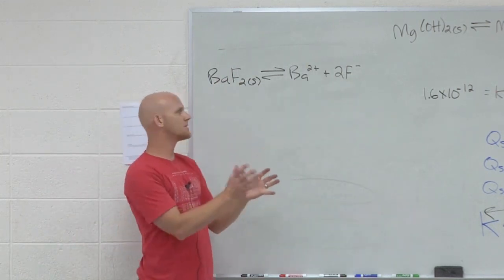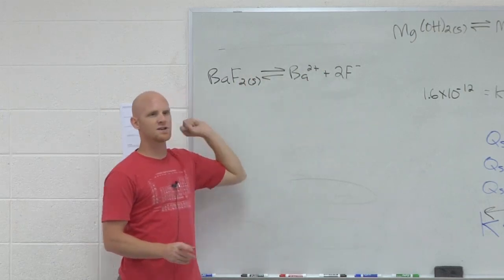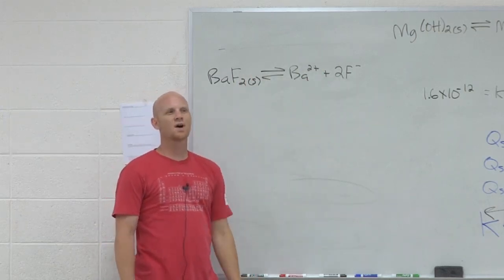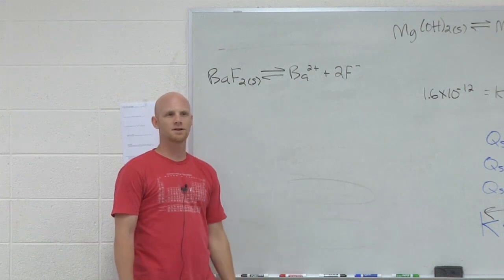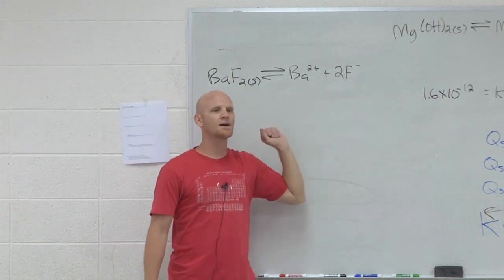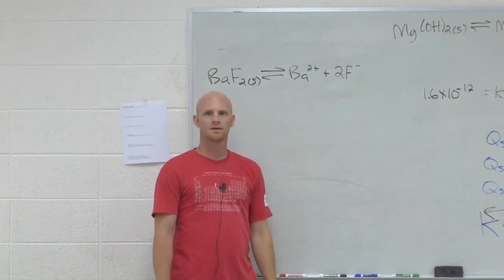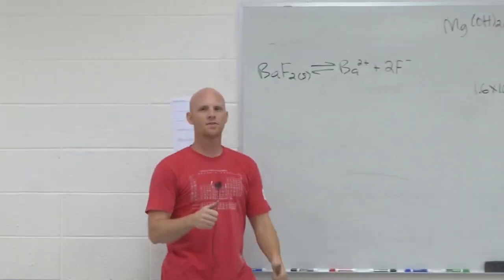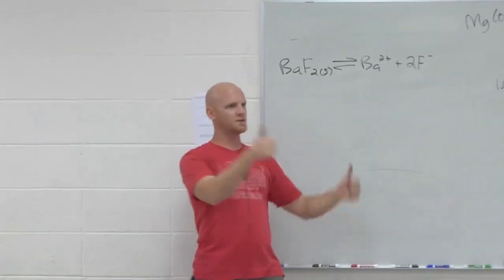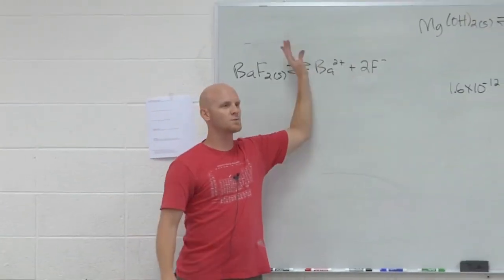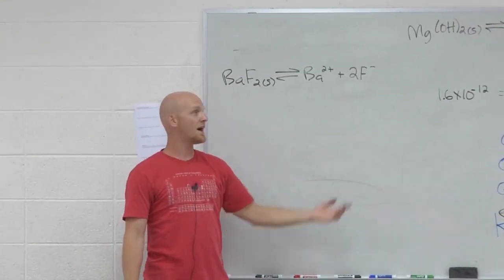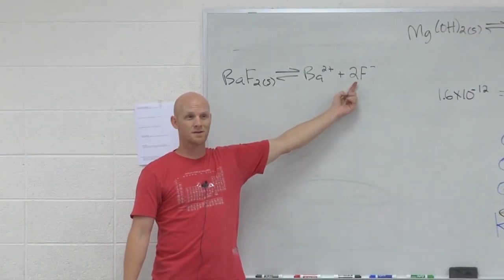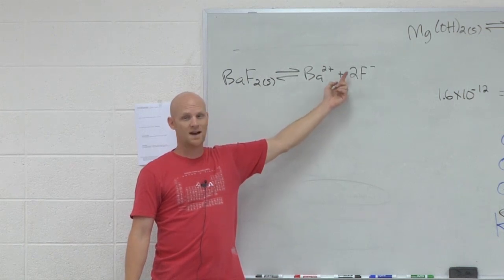So let's say I had a beaker with this saturated solution in it. And let's say I told you I had a magic formula that turned fluoride ions into frogs. And I went, abracadabra! And all these frogs just started jumping out of the beaker until all the fluoride was gone. Because I did that, what happened to the concentration of fluoride in the beaker? It went down.